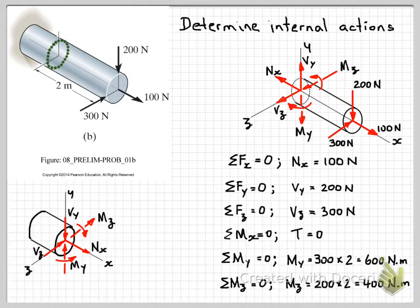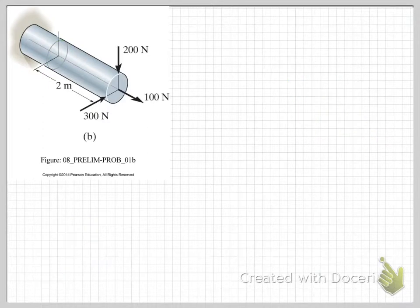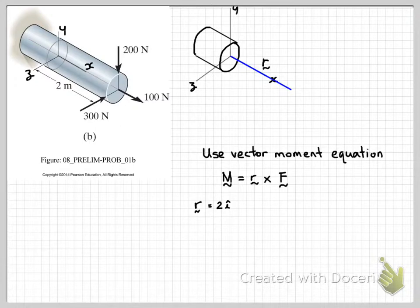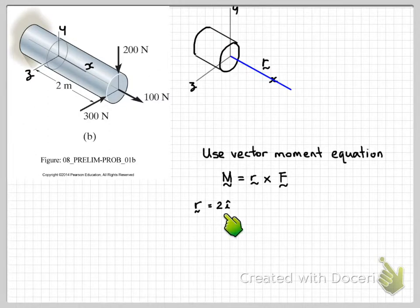Next I'll show you an alternative method to get directly to the internal actions on this cross section using the vector moment equation. So if we draw our cross section again and write out our vector moment equation M equals R cross F: the vector R is the distance from the point where we want to calculate moments to where the force is applied. In this case R is equal to 2i — so 2 metres in the x direction with unit vector i. If you're unsure about vector operations, I have another video on vector algebra you can look at.